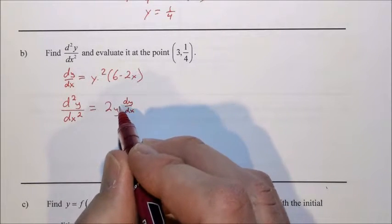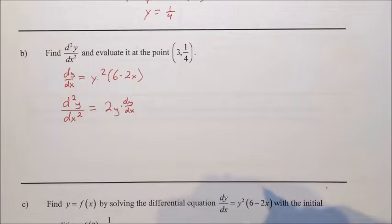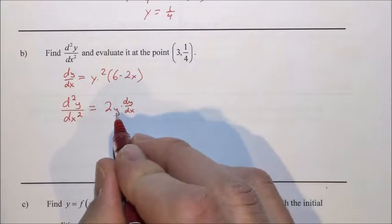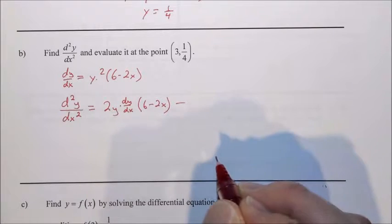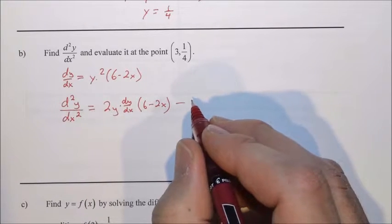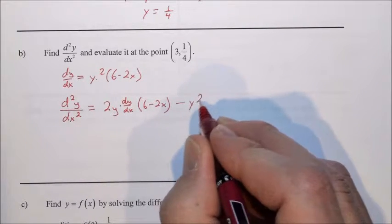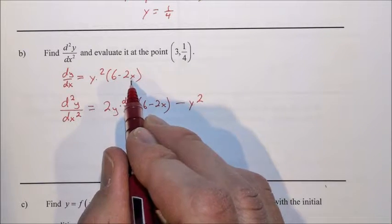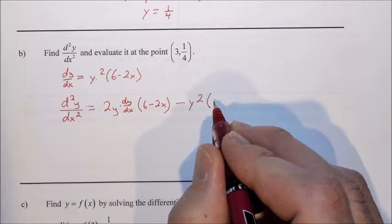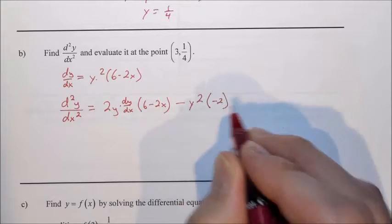So derivative of the first, y squared derives to 2y dy/dx. Remember, whenever we derive a y term implicitly, we need the dy/dx after we take our derivative. So derivative of the first, and then we keep the second, minus now we keep the first, and we take the derivative of the second.